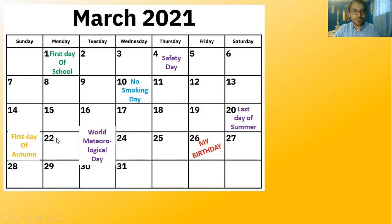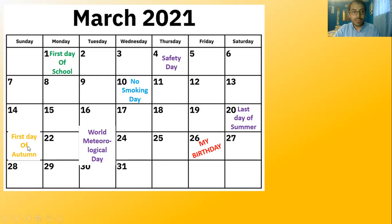All of these are some celebrations — some holidays. For example, on Monday we had the first day of school. Safety day is on Thursday the 4th. No smoking day — the international no-smoking day — is on the 10th. Last day of summer — 'summer' means verano — followed by first day of autumn, my favorite season. Then we have world meteorological day. And — what is my birthday? Yes! This is my birthday, it's my birthday!